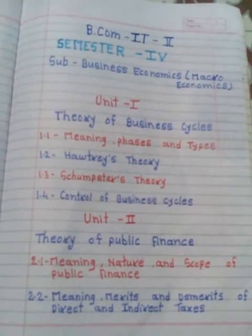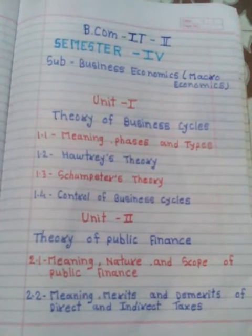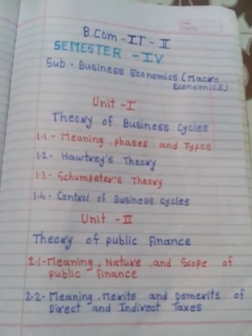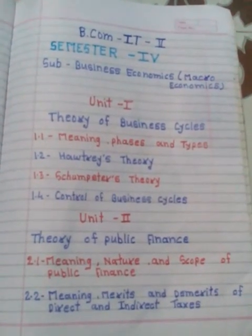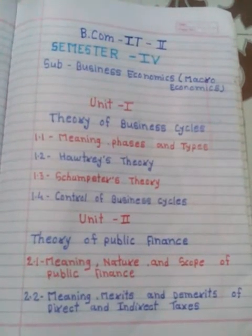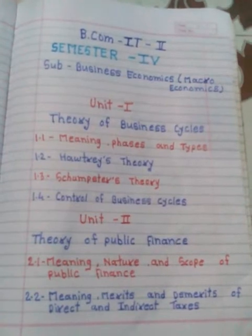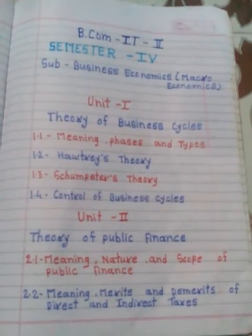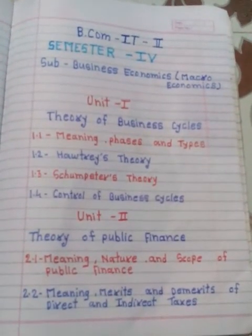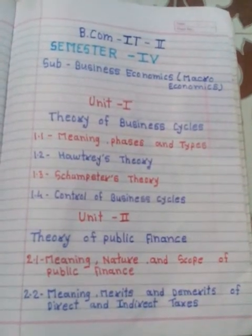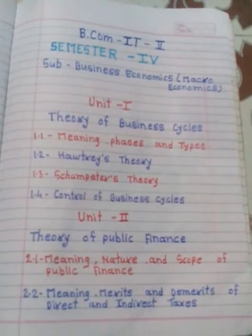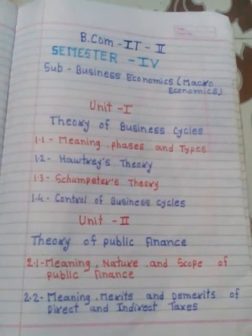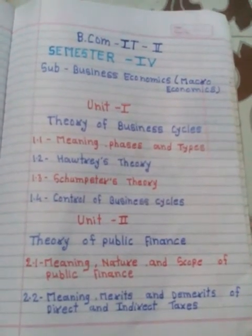Topic 2.2 covers the meaning, merits and demerits of direct and indirect taxes. We are well aware of tax structures. Why do we pay tax to the government? Because we take advantage of government services. The government expands money for social services and provides all these opportunities free of cost to society, and that is why every person should pay tax to the government.